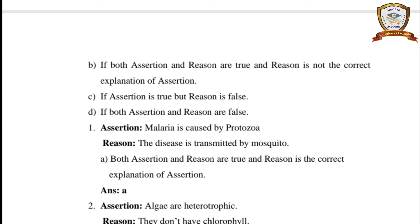Question 1. Assertion: malaria is caused by protozoa. Reason: the disease is transmitted by mosquito. Both assertion and reason are true, and reason is the correct explanation of the assertion. Answer: A.